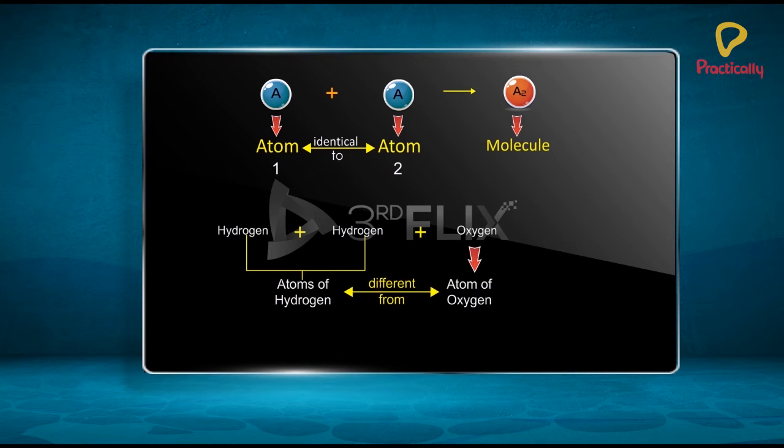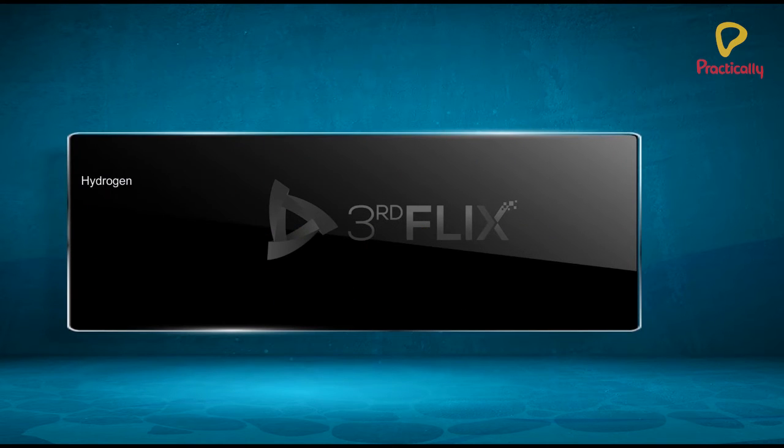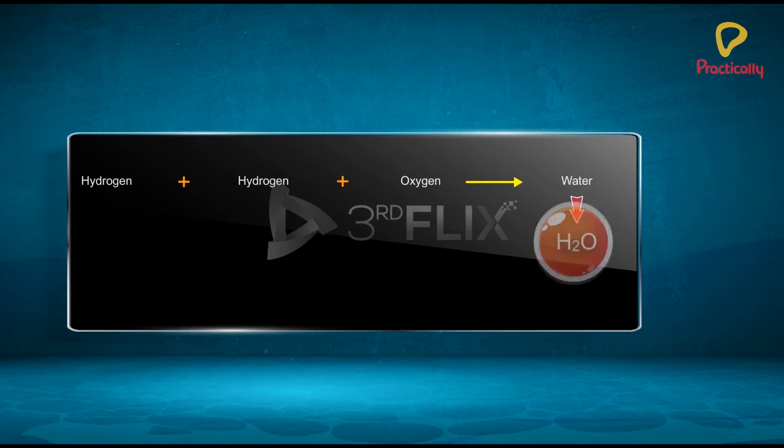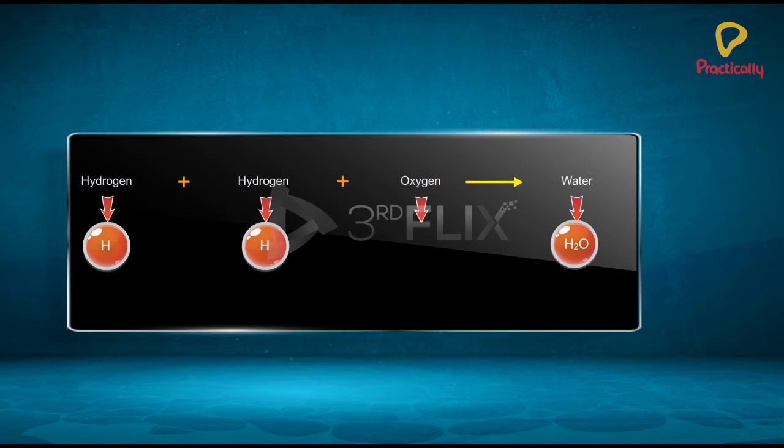Atoms of different elements combine in simple numerical ratios to form compounds. A molecule of a substance can be represented with the help of symbols of elements present in it.